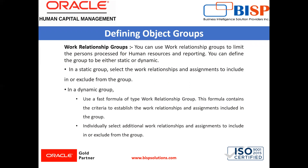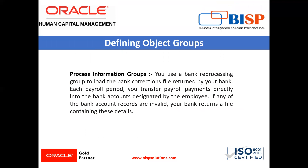Next is the work relationship group. You can use a work relationship group to limit the persons processed for human resources and reporting. You can define the group to be either static or dynamic. In a static group, select the work relationship and assignments to include in or exclude from the group. In a dynamic group, use a fast formula of type work relationship group. This formula contains the criteria to establish the work relationship and assignments included in the group. You can also individually select additional work relationships and assignments to include in or exclude from the group.